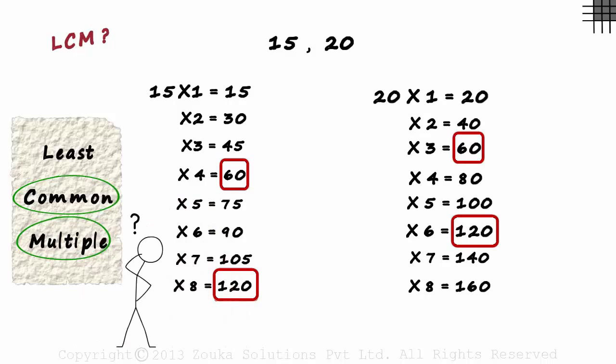Now we get to the first word, which is least. So out of all the common multiples, we choose the one which is least. It's simple. 60 is the least common multiple.